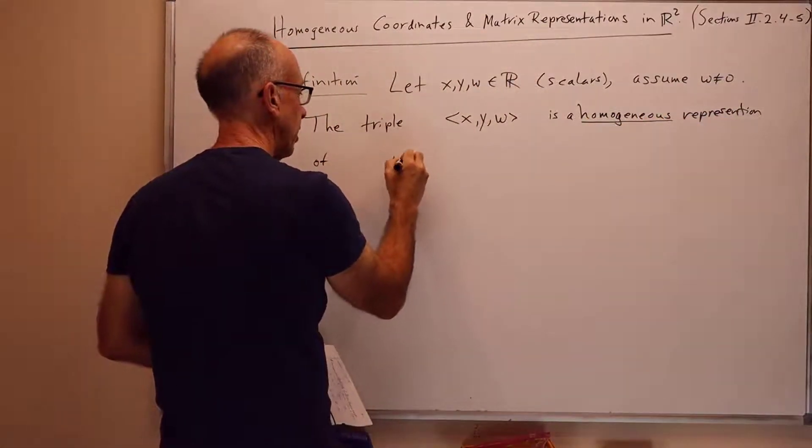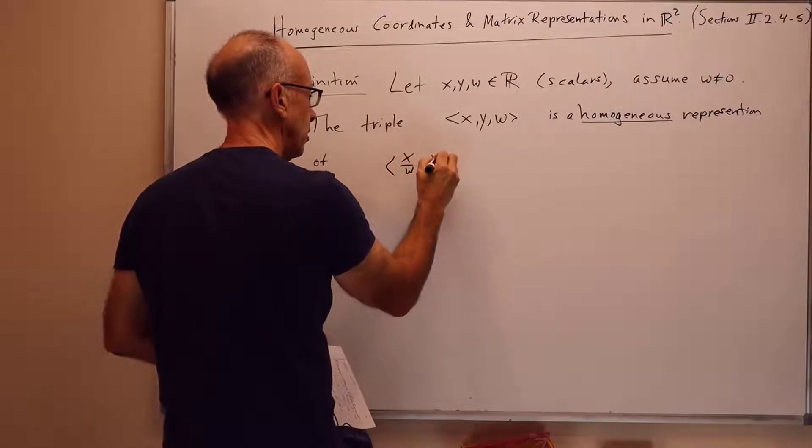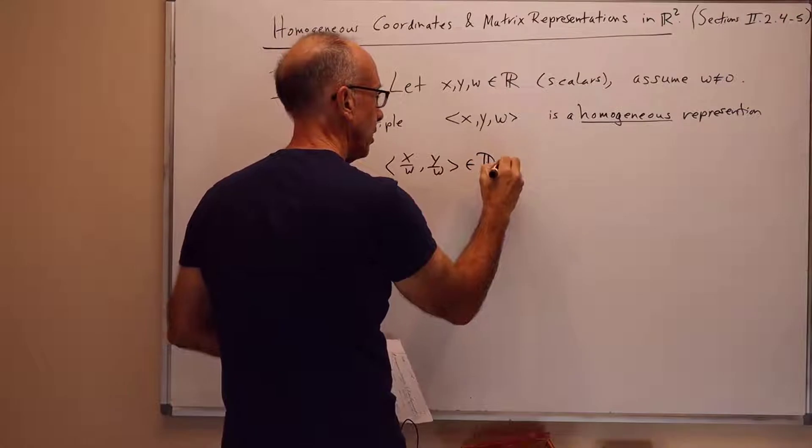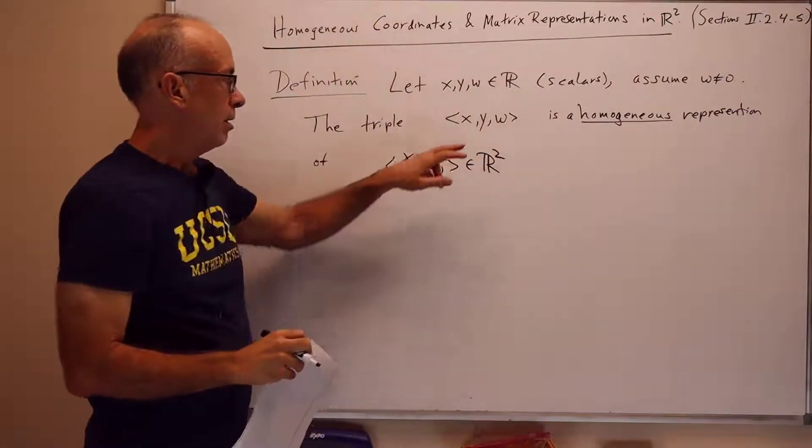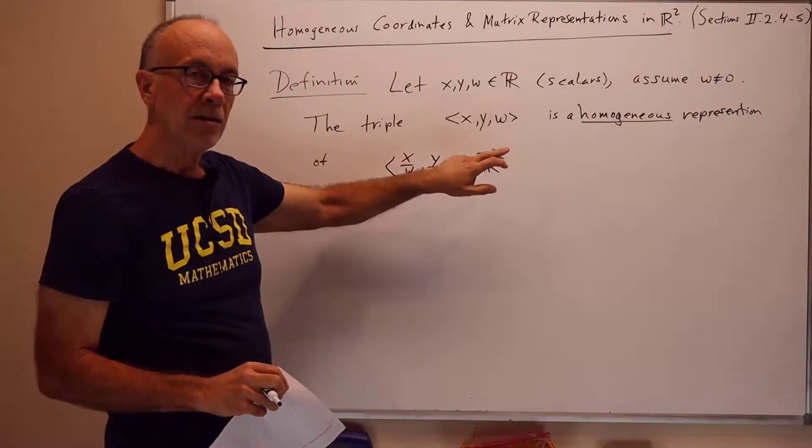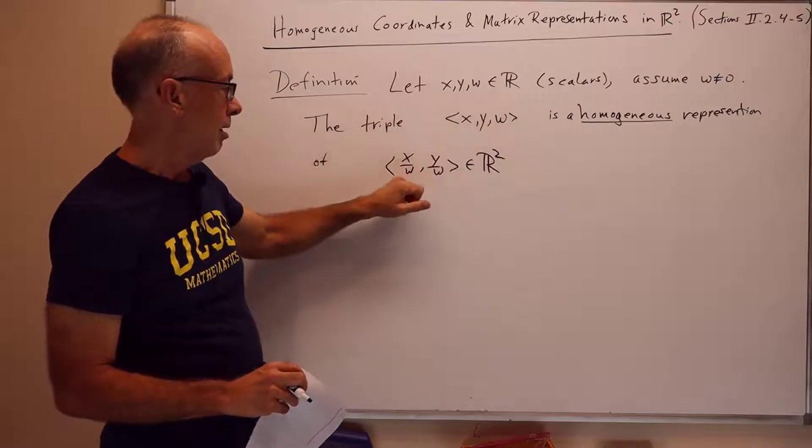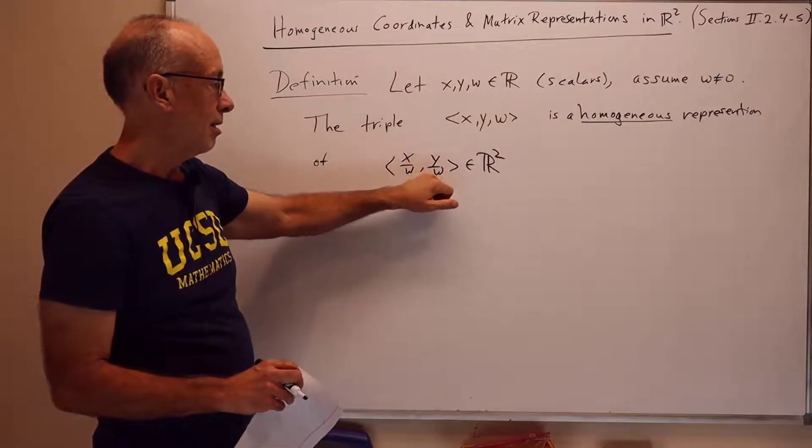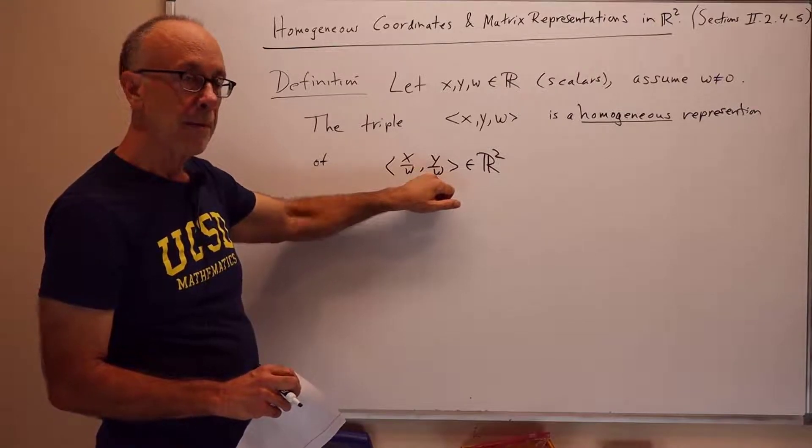of the following point, of the point x over w, y over w, in R2. So, in other words, these three numbers, x, y, w, represent a point in two-space. The first coordinate, the x coordinate of the point is x over w. The second component is y over w. So, let's do some examples here.